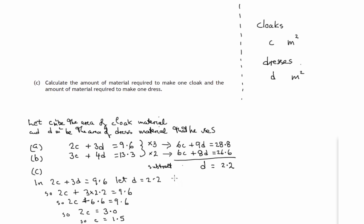Now sometimes it's good to check. Checking in the equation we didn't use, we used 2C plus 3D equals 9.6. Let's use 3C plus 4D and check with these values. 3 times 1.5 plus 4 lots of 2.2.